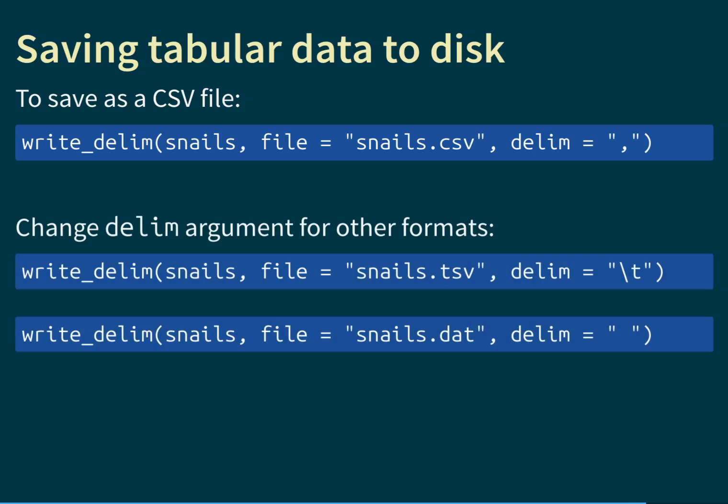It is also possible to save files in other formats. To save a tab-separated value file, specify the delimiter as '\t', which represents a single press of the Tab key — distinguishing it from multiple spaces. Or for a space-separated format, specify a single space between the quotes as the delimiter, and the computer will understand that as a single space separating column entries.